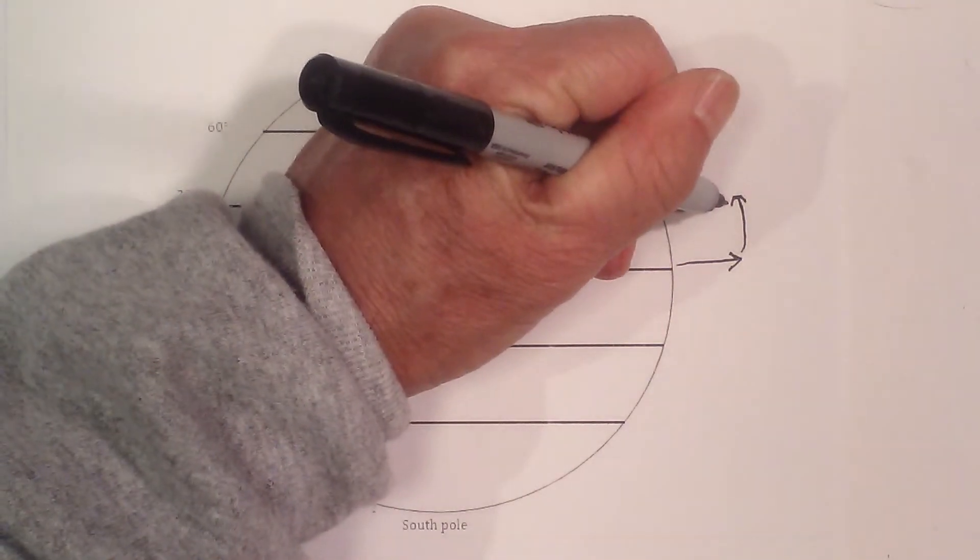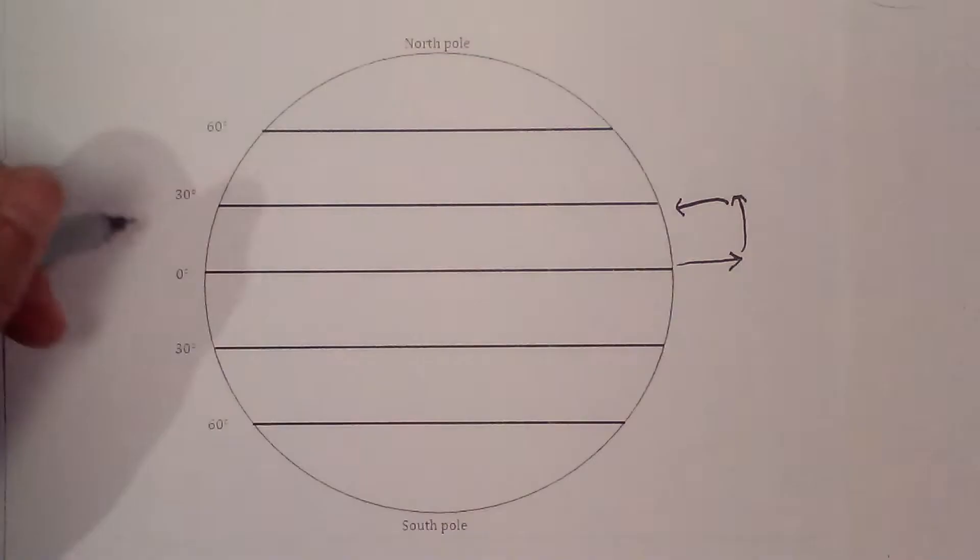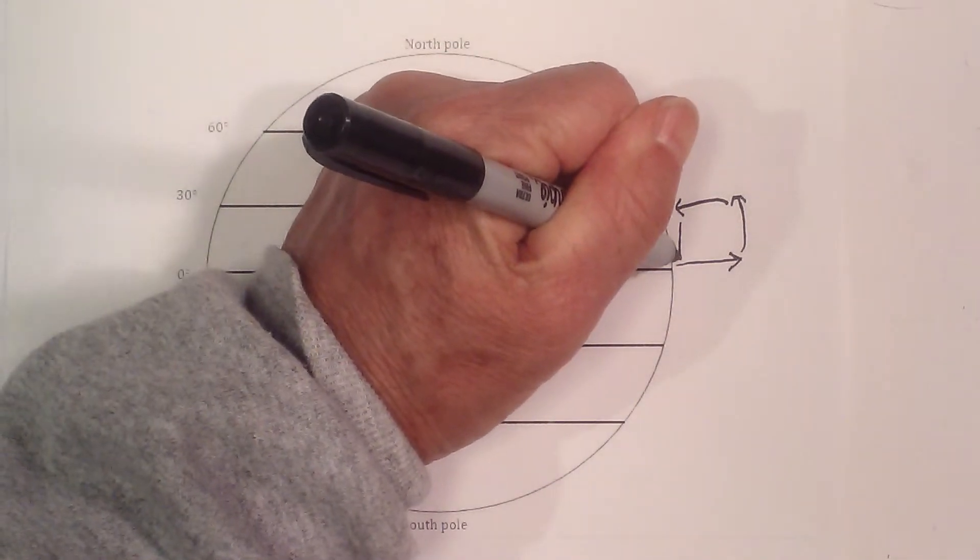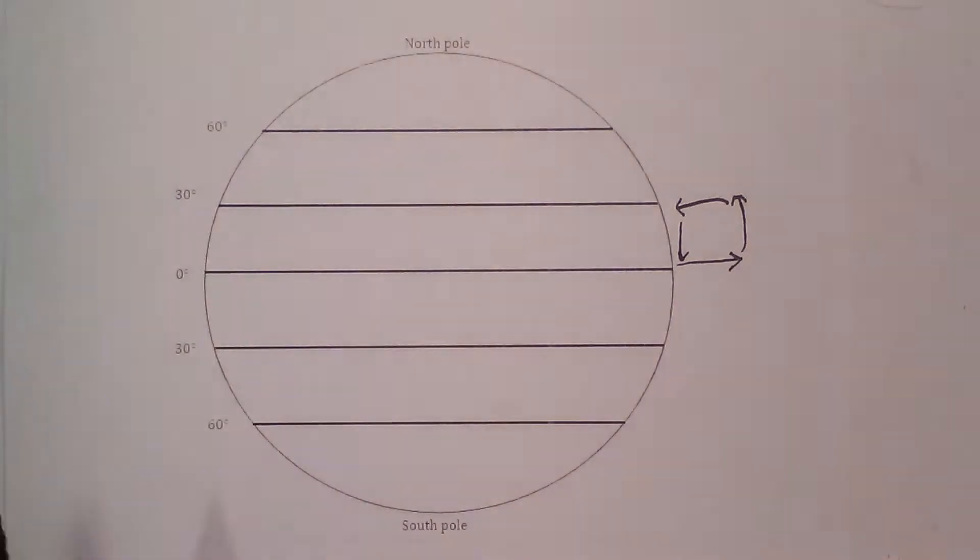It spreads out and begins to sink back down at approximately 30 degrees. Then it will spread back out. It makes a circular loop. It's convection.